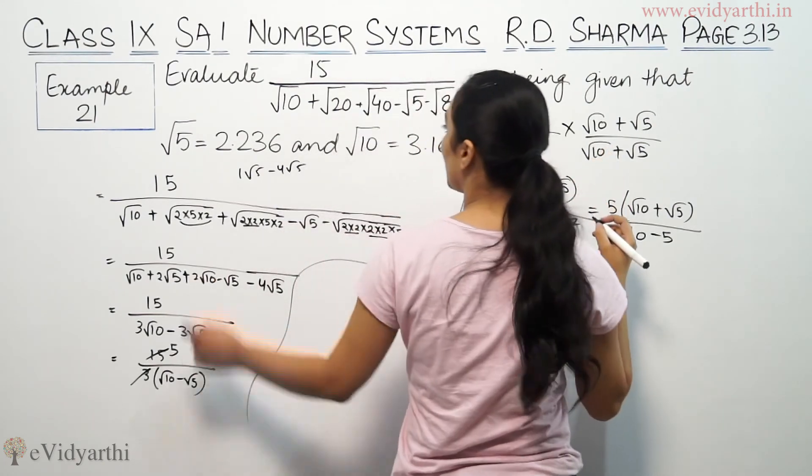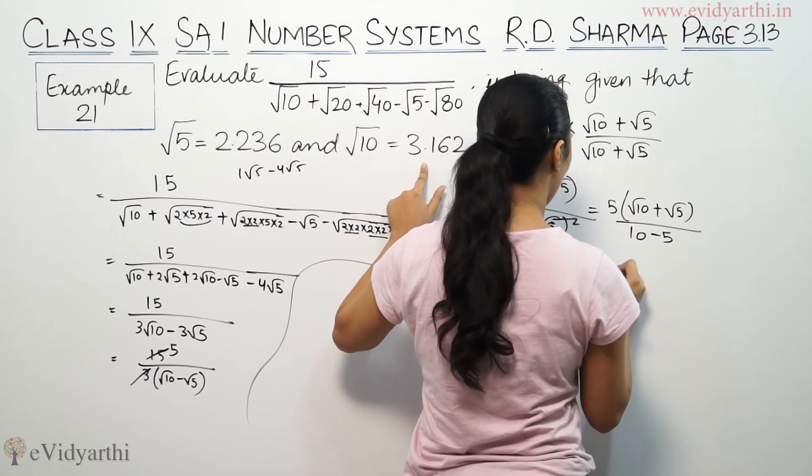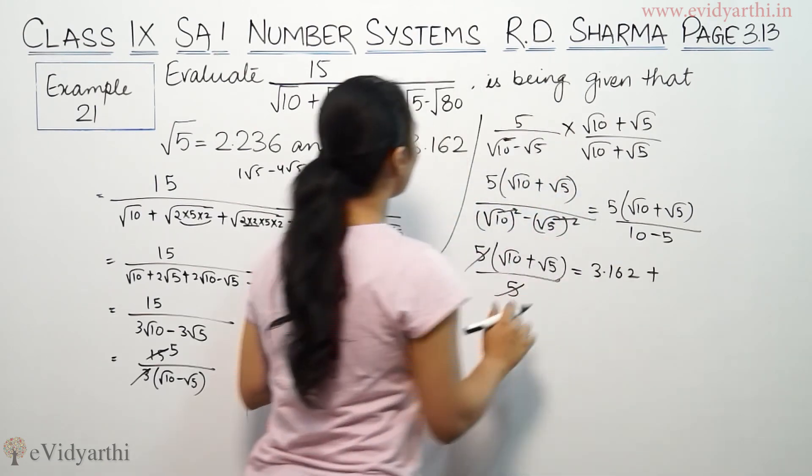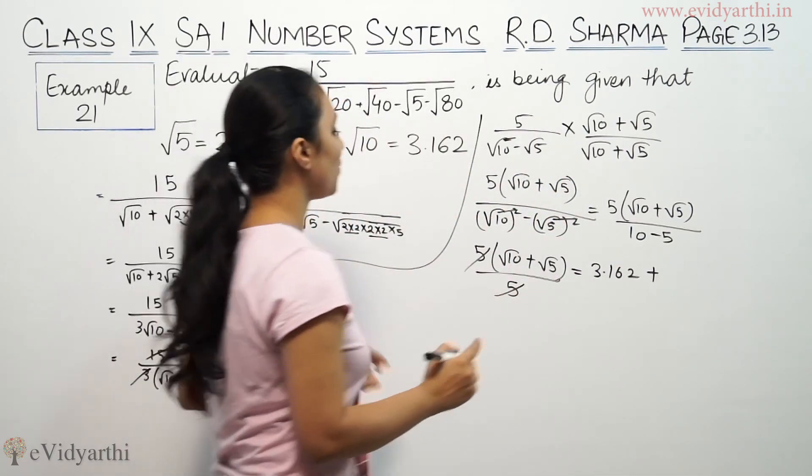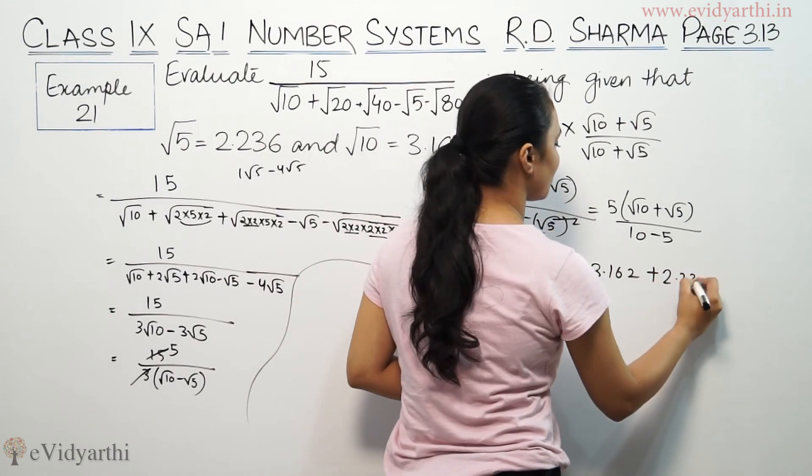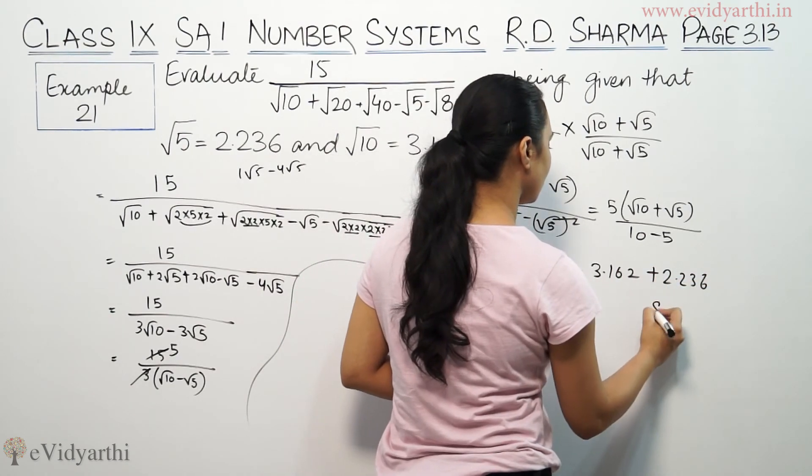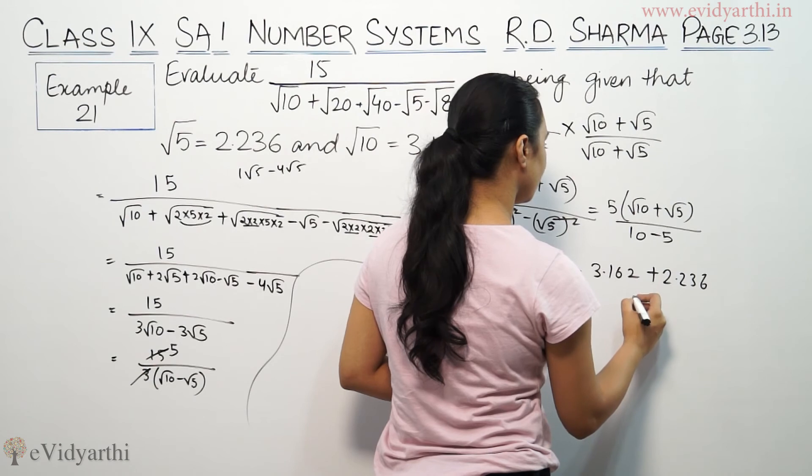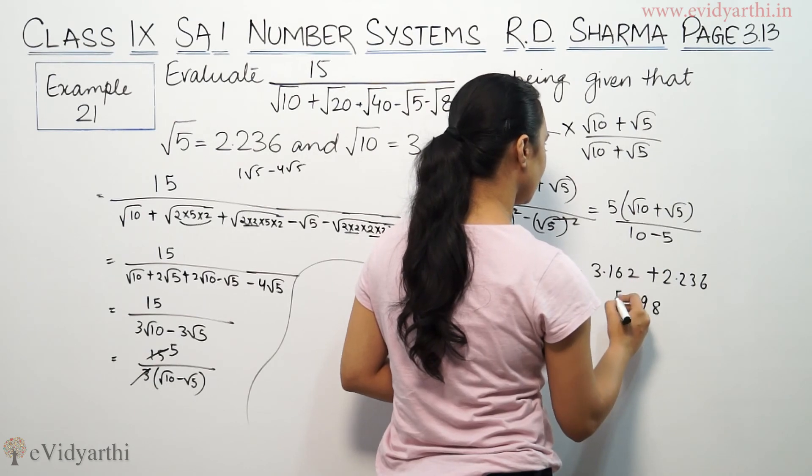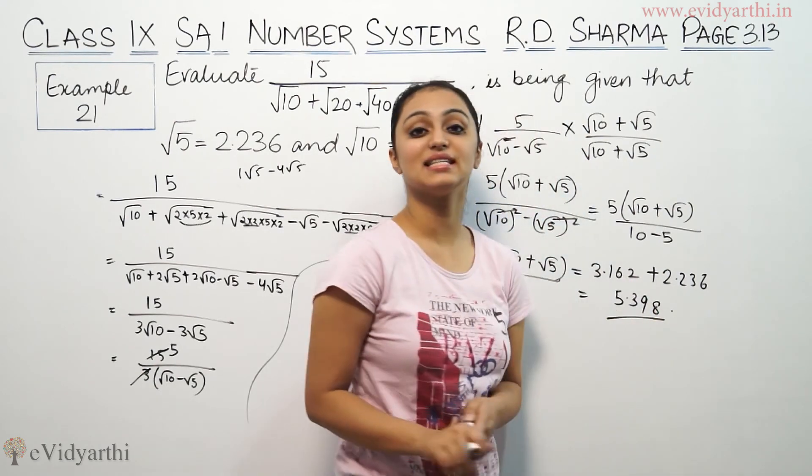Root 10 ki value given in the question is 3.162, root 5 ki value is 2.236. So 5.398 is the answer.